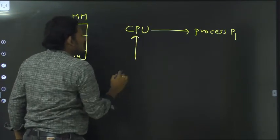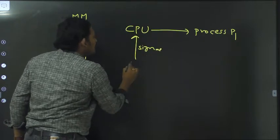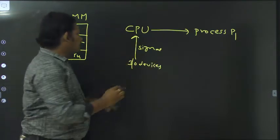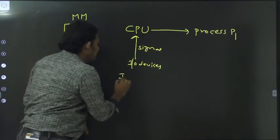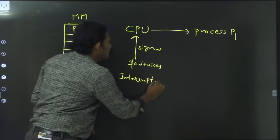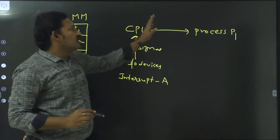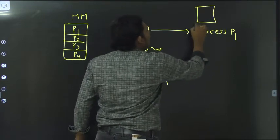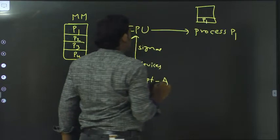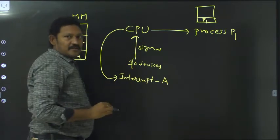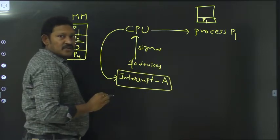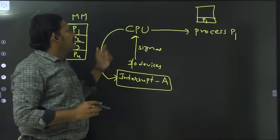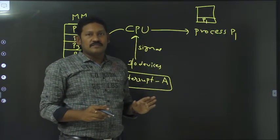Now, if an interrupt occurs — an interrupt is a signal sent by the I/O devices. Let's say this is interrupt A. Because of this interrupt, the CPU will stop executing process P1 and keep P1 on hold in a stack. Now the CPU will start executing interrupt A. After completion of this interrupt, the CPU will go back to process P1 and continue its execution.